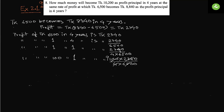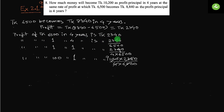From the question we get: taka 6500 becomes taka 8840 in four years. So profit equals profit principal minus principal, which equals taka 2340. So the profit of taka 6500 in four years is taka 2340.